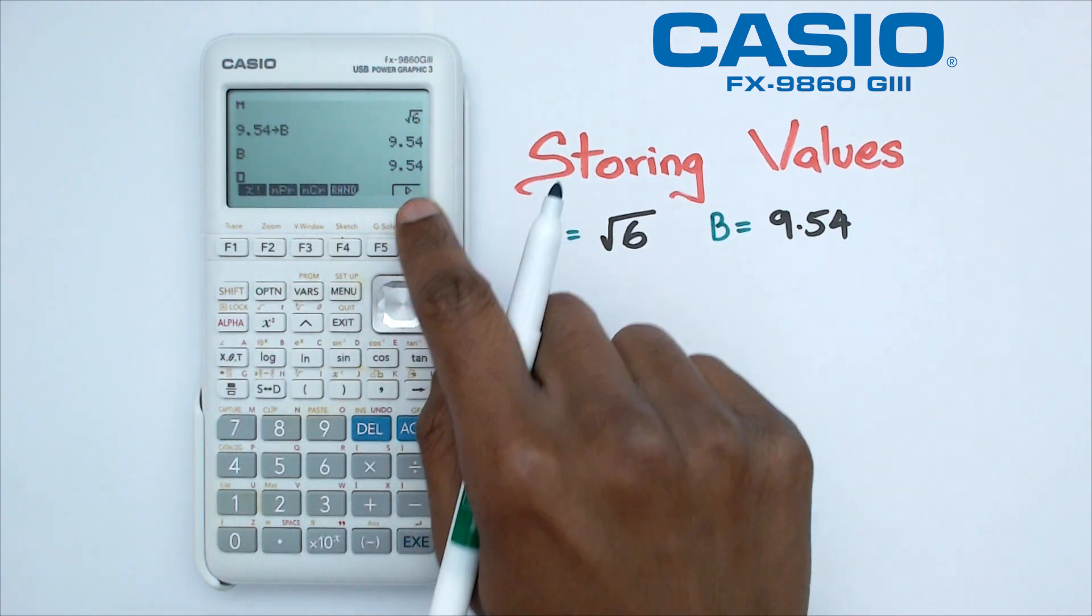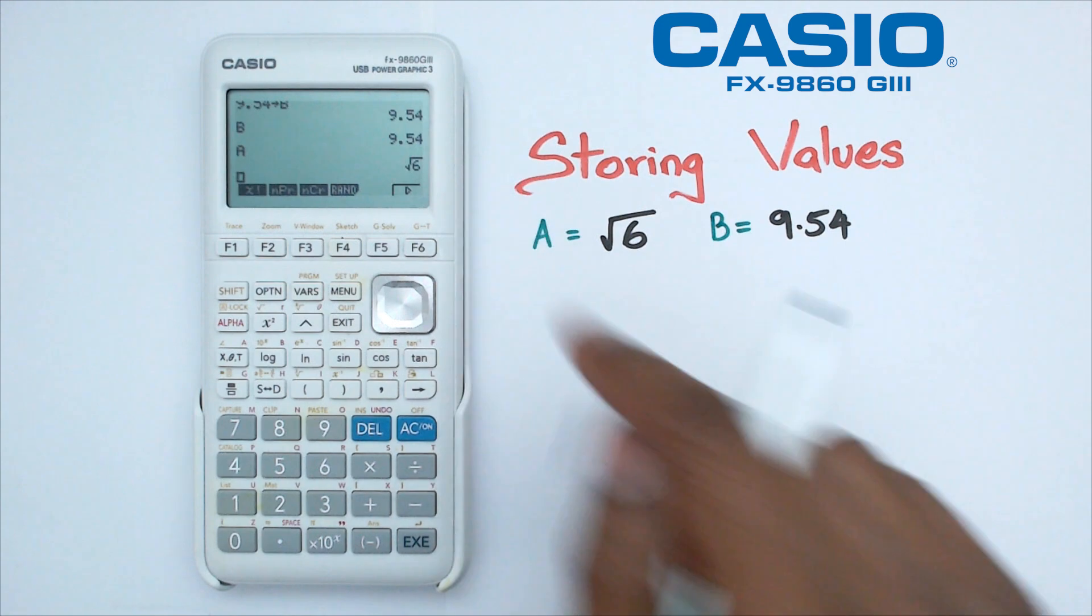Now basically anytime I do alpha B I'm actually going to get 9.54, and if I do alpha A I'm going to get square root of six.